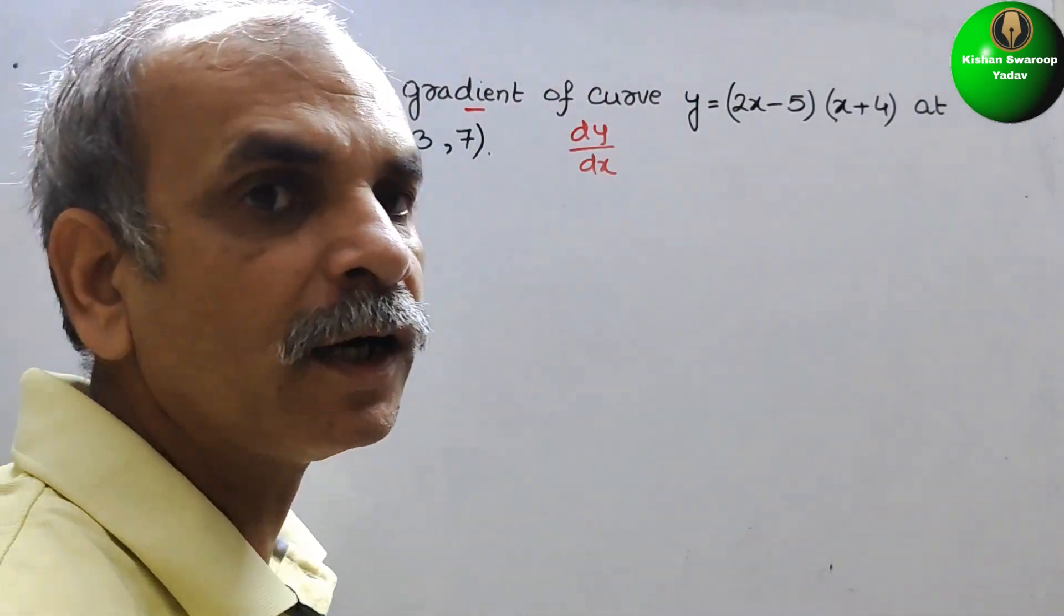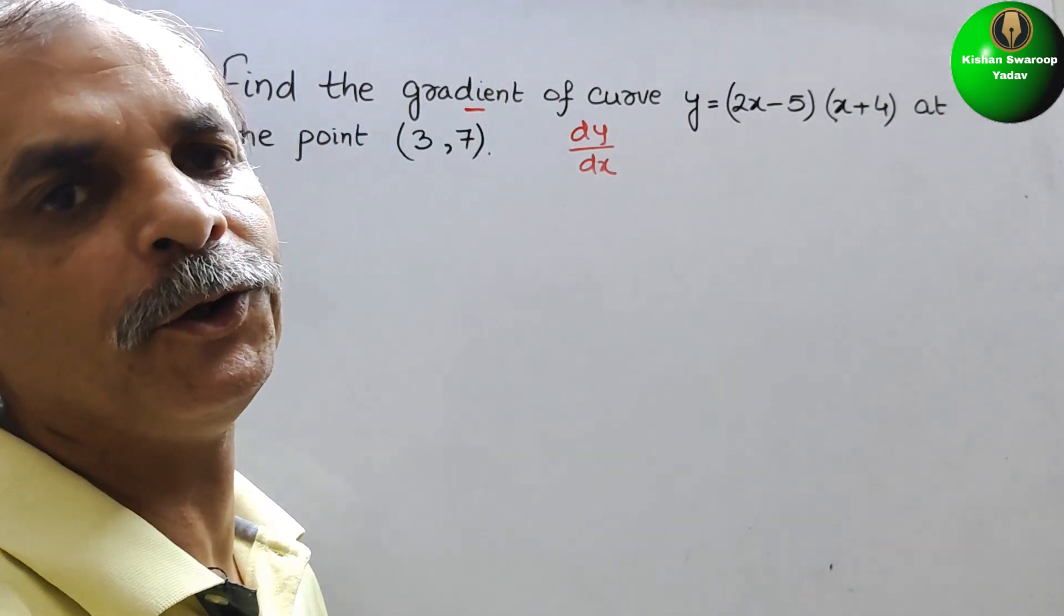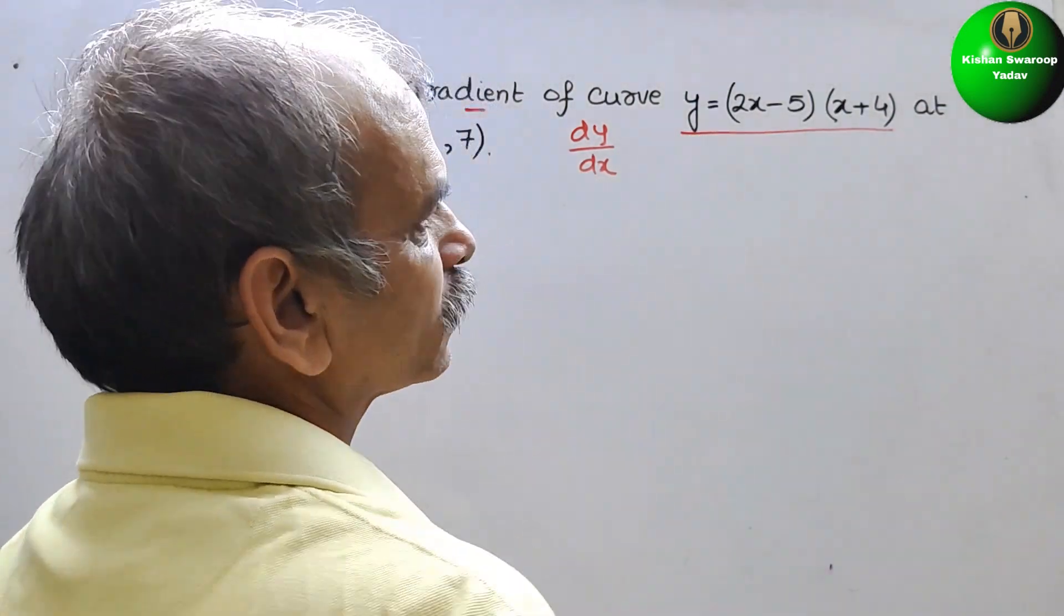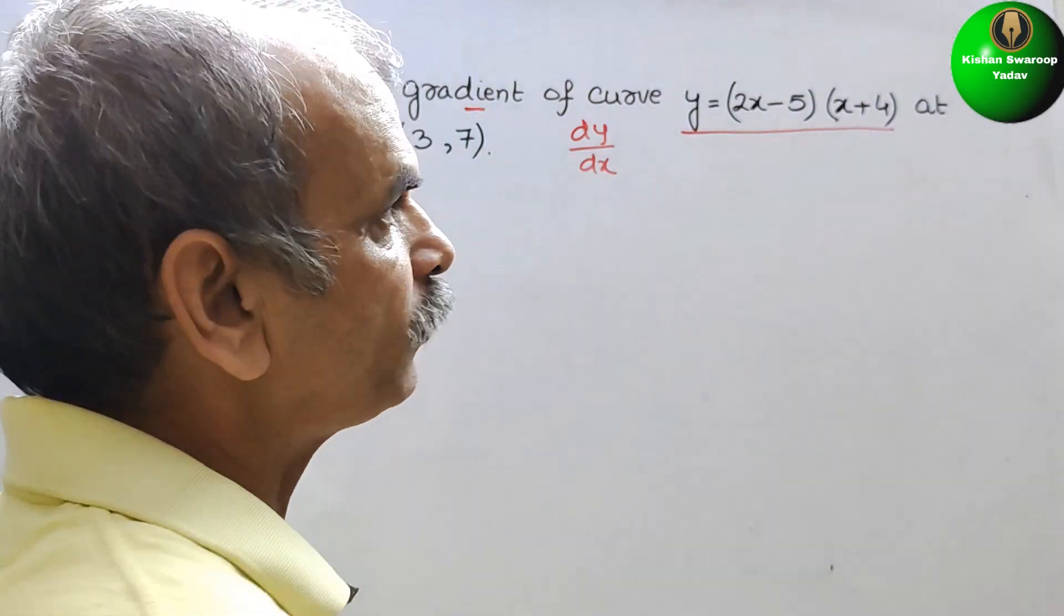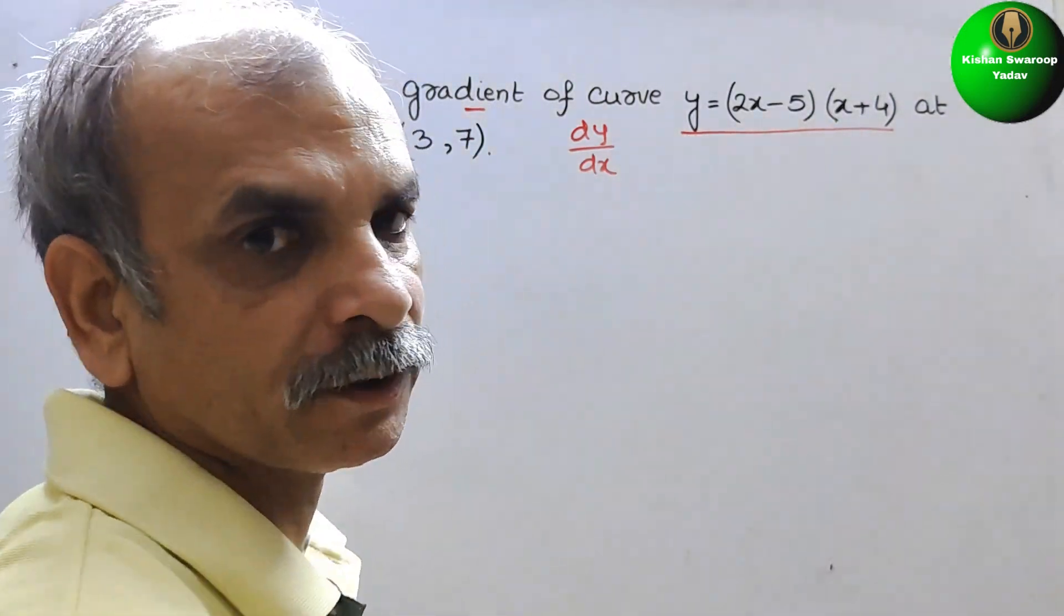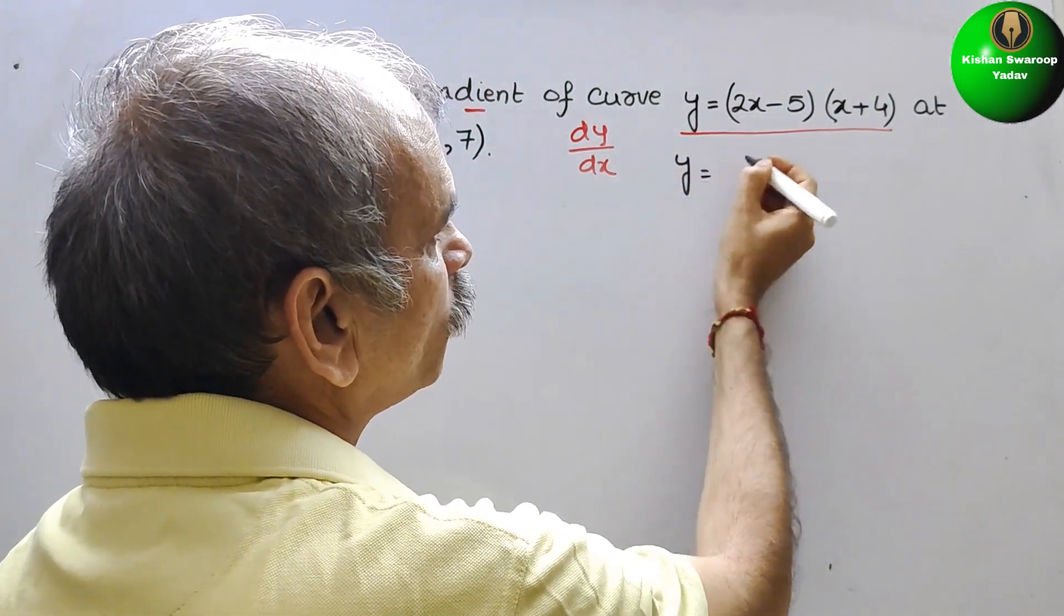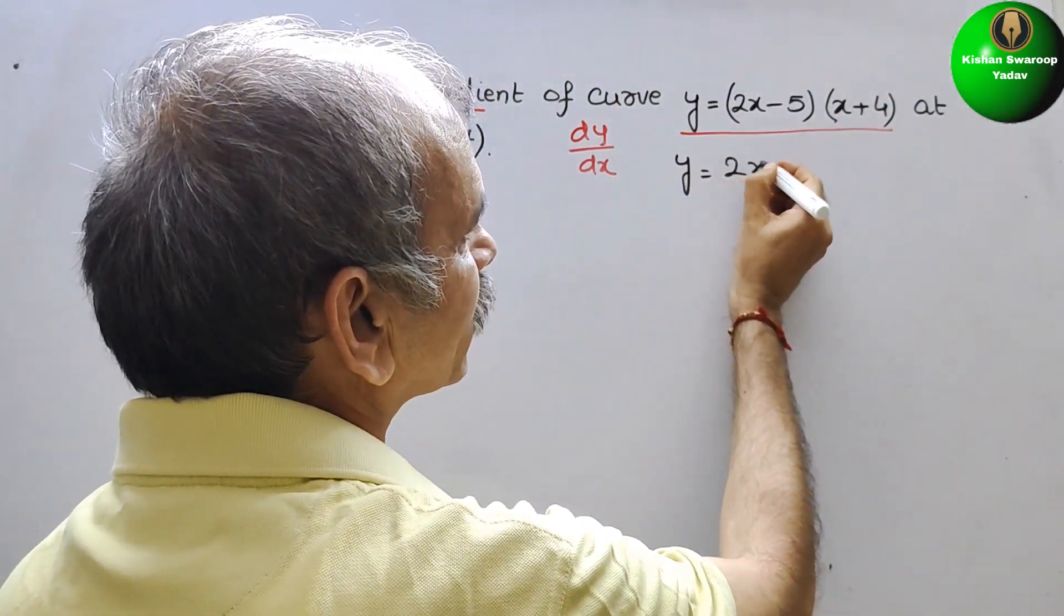So this is nothing but your differentiation of the value. So we have to go for the differentiation of this. So first we will solve this multiplication. What it will be? y is equal to 2x square.